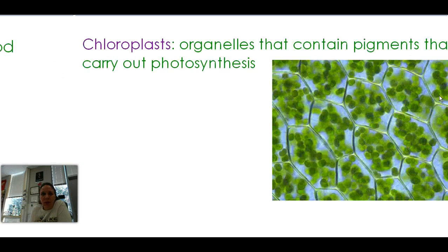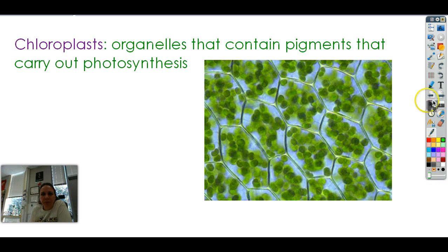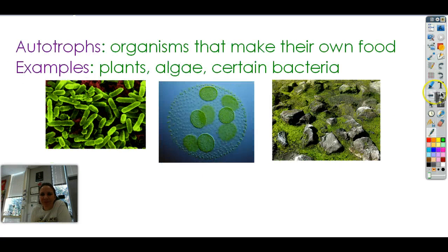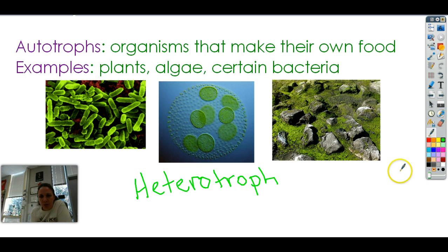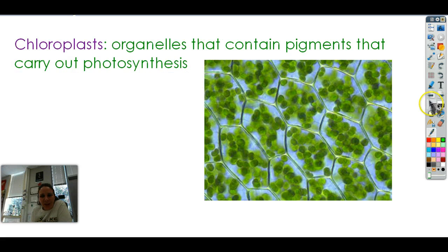So we are called heterotrophs. Hetero means different; troph means eat. I get my food from a different source. Heterotroph — different food.